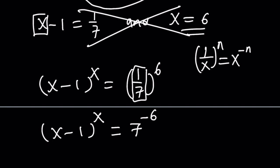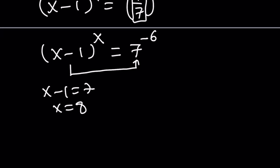Now, do we have a correspondence? Let's see. Can x minus 1 be 7, which means x is 8, and x equals negative 6 at the same time? And the answer is no. It's impossible. But guess what? We can manipulate this a little bit more to get what we want.